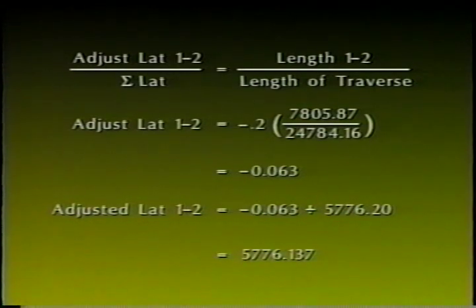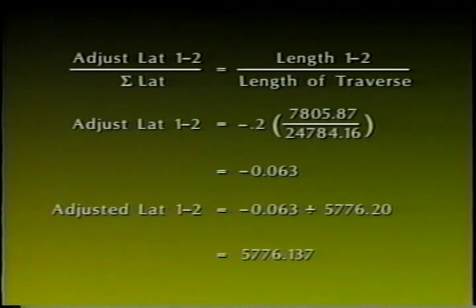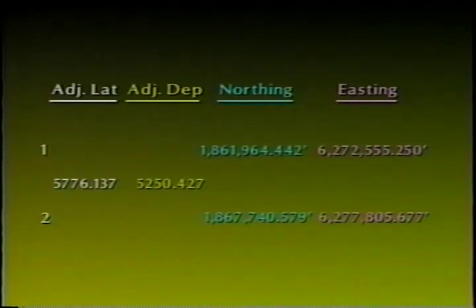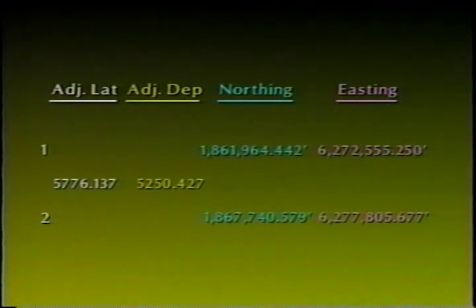Once you have calculated the latitude and departure corrections, you would apply these corrections to each leg of the traverse by applying the latitude and departure values to your start point coordinates, computing the individual traverse station coordinates. In the following example, the corrections to latitude and departure and final station coordinates of point 2 are shown. It is important to apply the corrections algebraically.